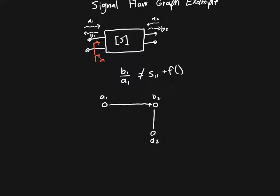We've got A2, B2, A1, B1. And we've got to make sure that our signals are all flowing in the right direction, so here it's just from A to B. This over here is S11, this over here is S22.